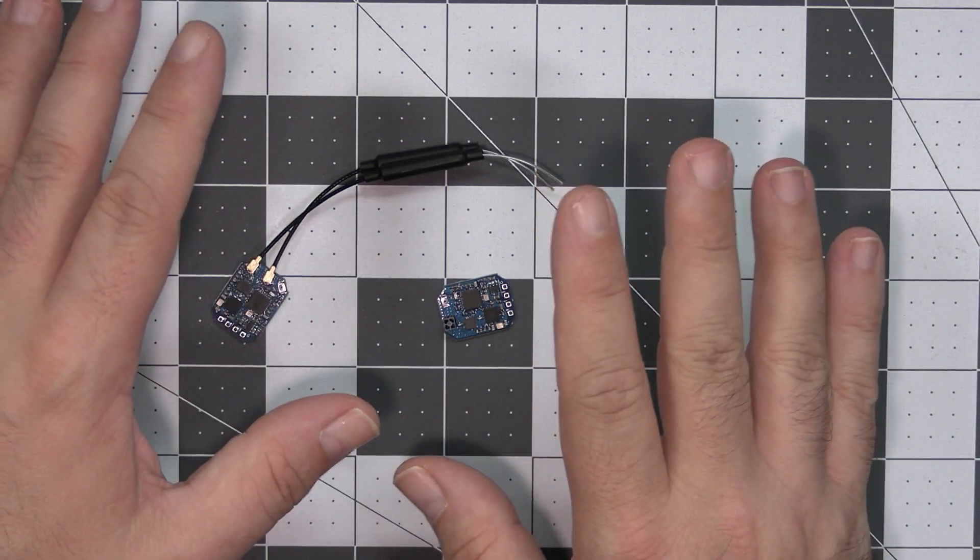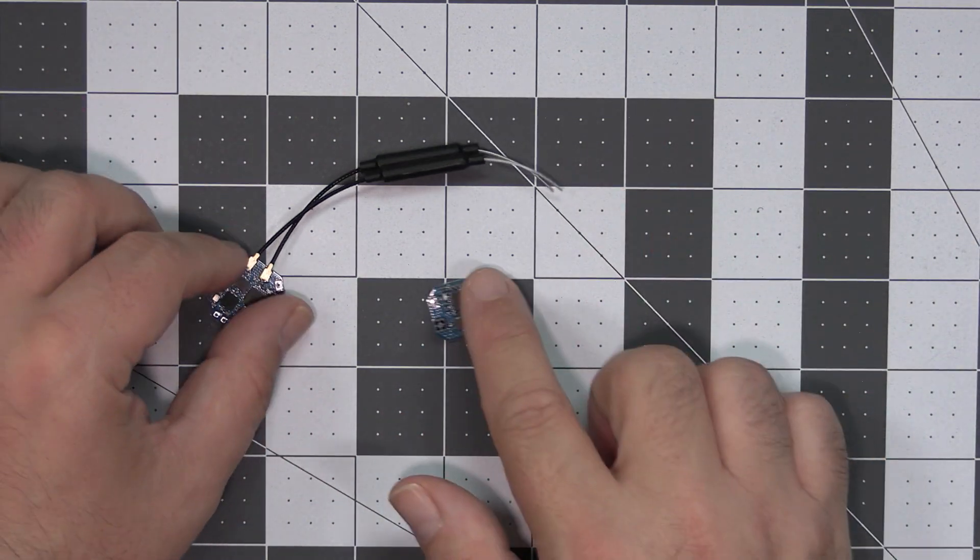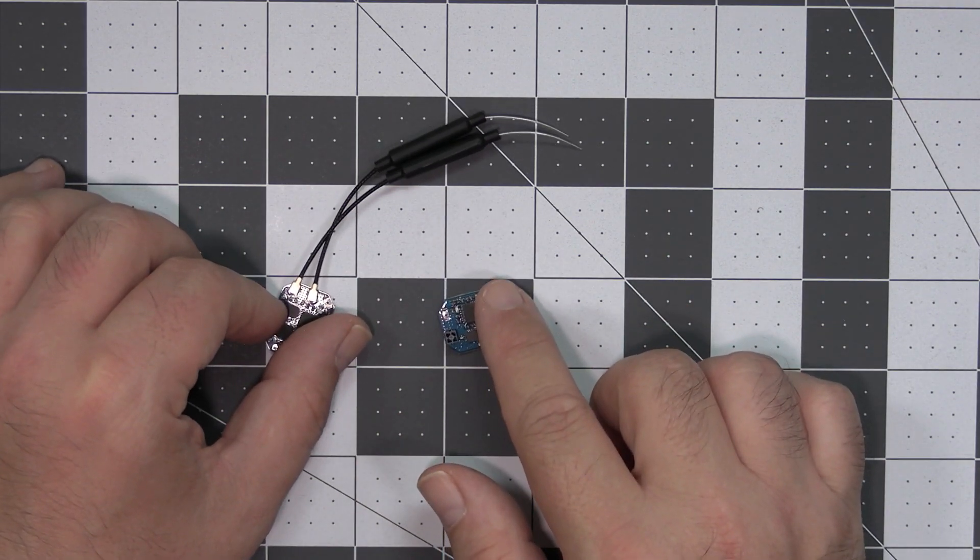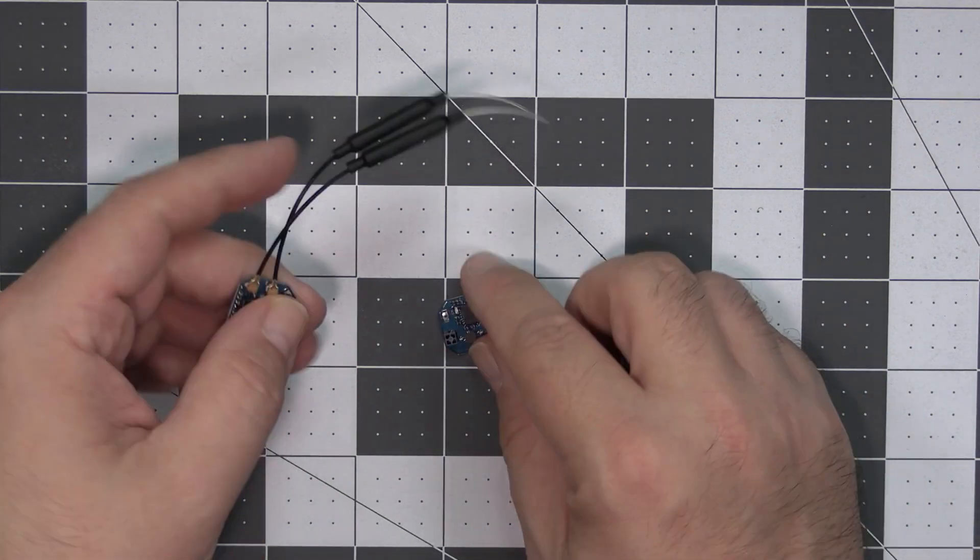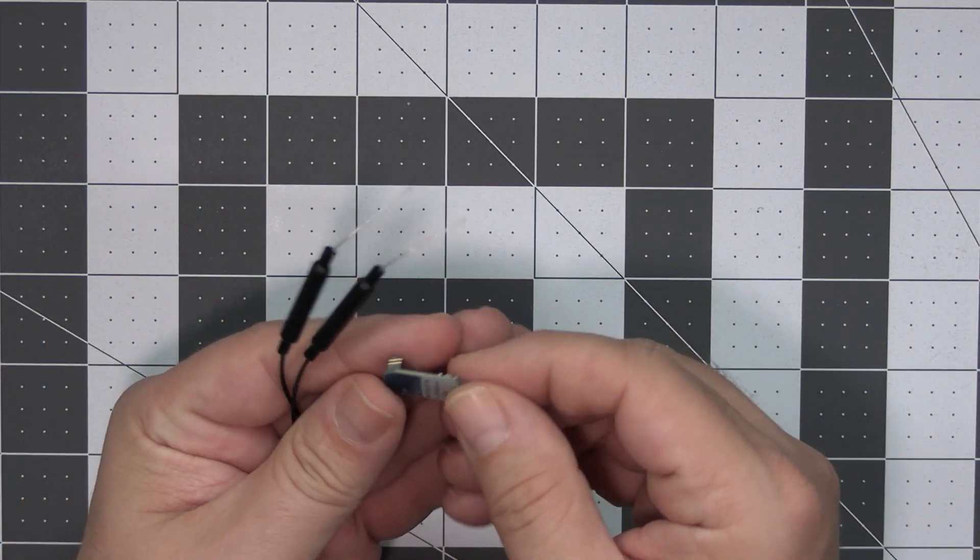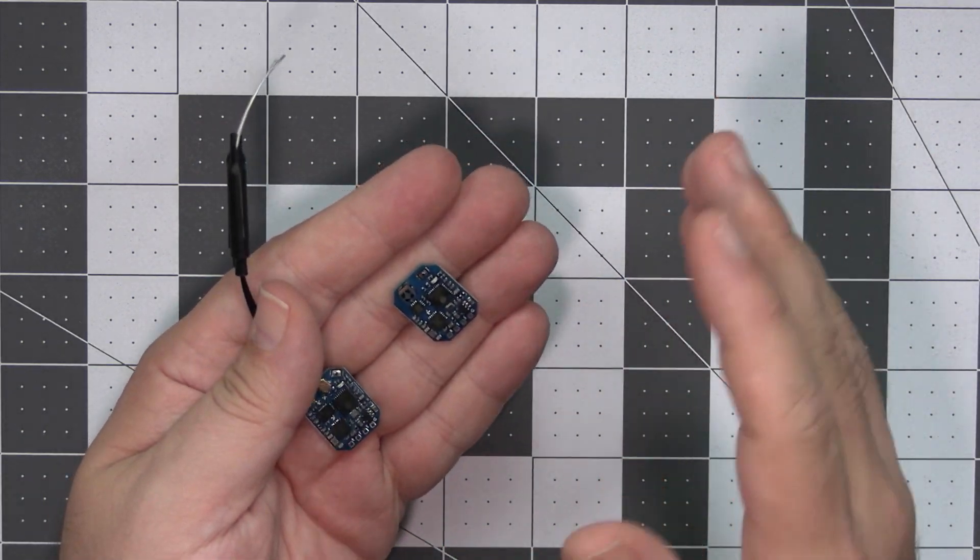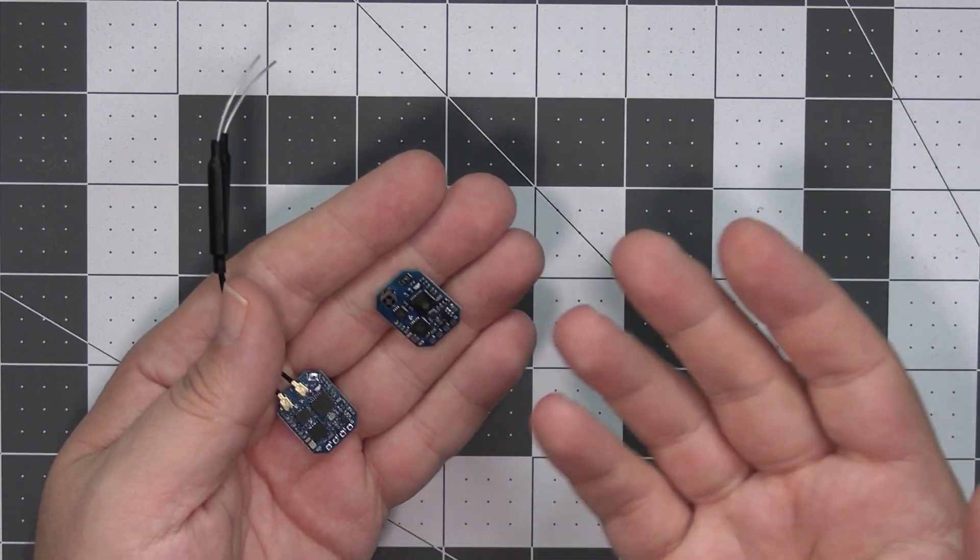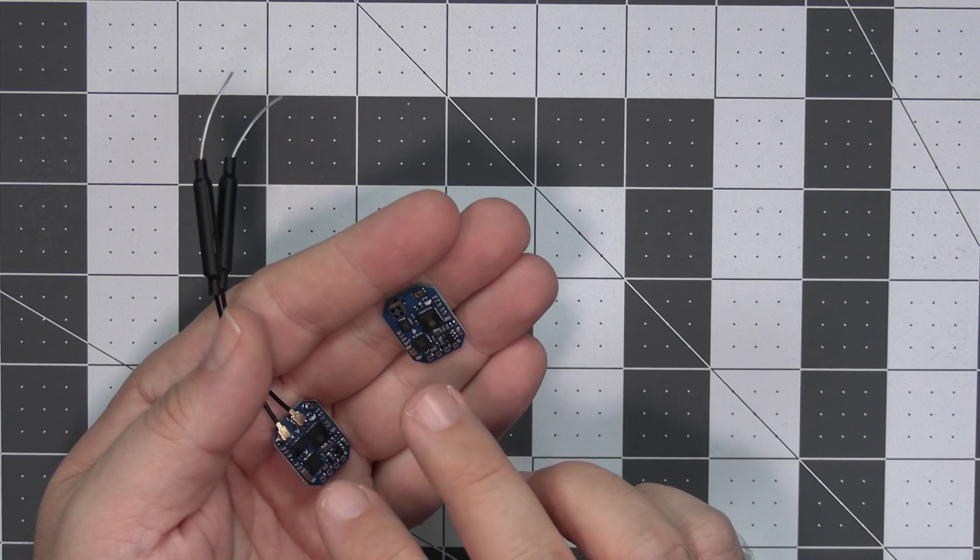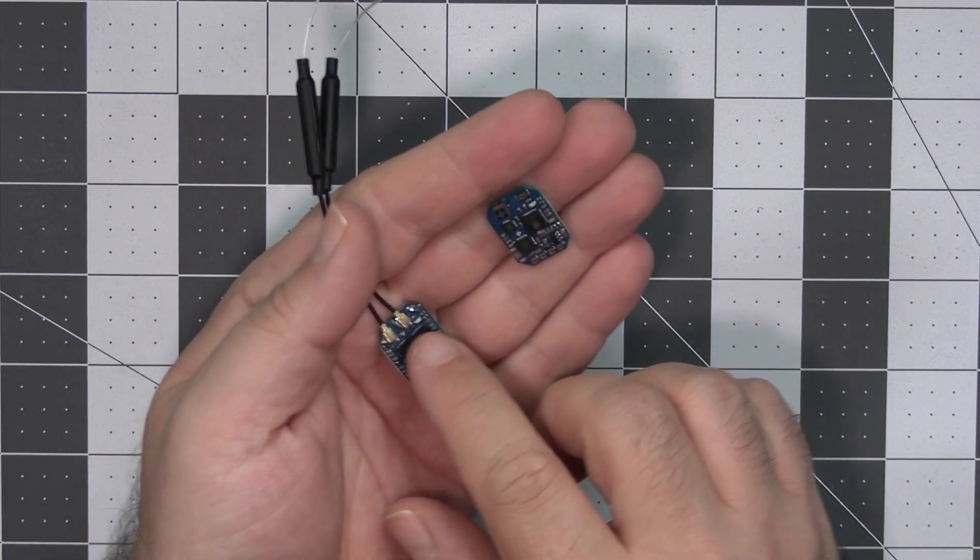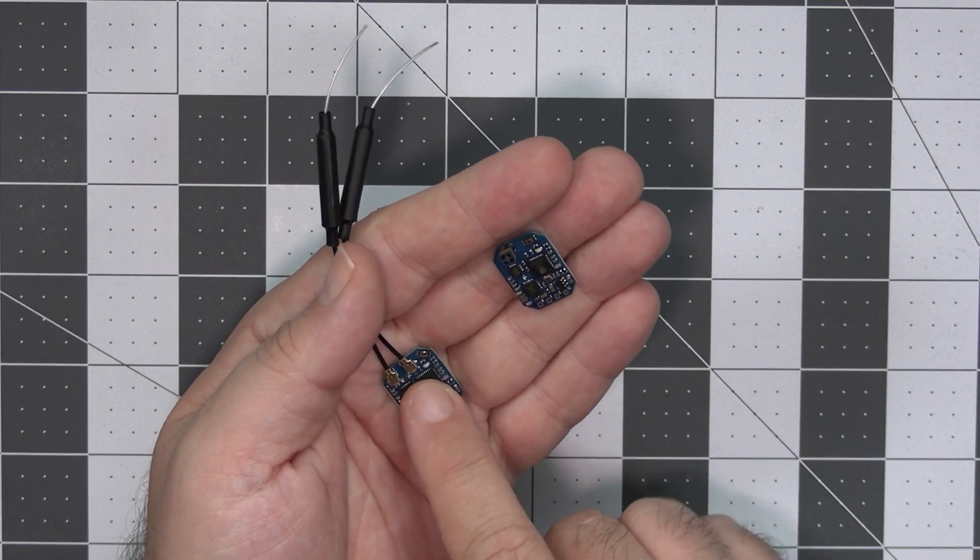There will be a separate video about those receivers, because I would like to have a detailed look under the microscope how they are built and how they compare to the cheaper options, because they are not cheap receivers. However, when you just take a look at the quality of the board, it's just top-notch quality that usually Matek delivers, because they just deliver usually very good quality. So, we will take a look in a separate video of how they are built, because especially this one is interesting thanks to built-in diversity.